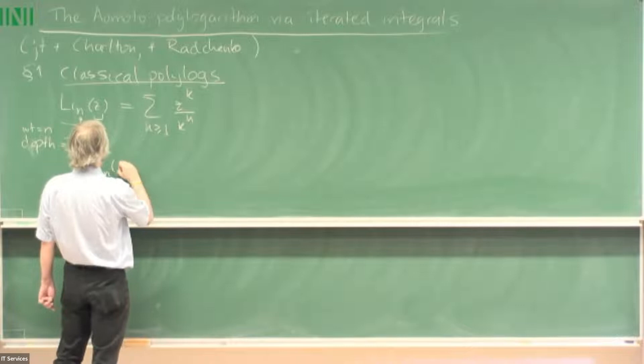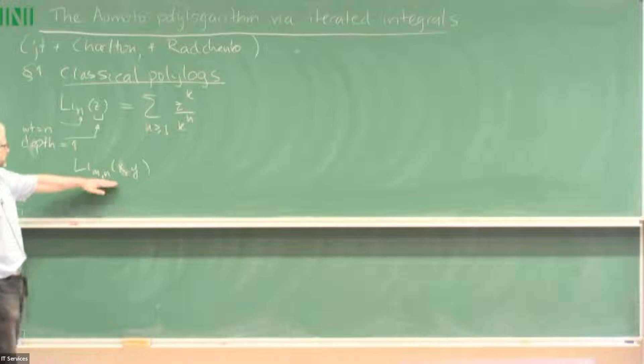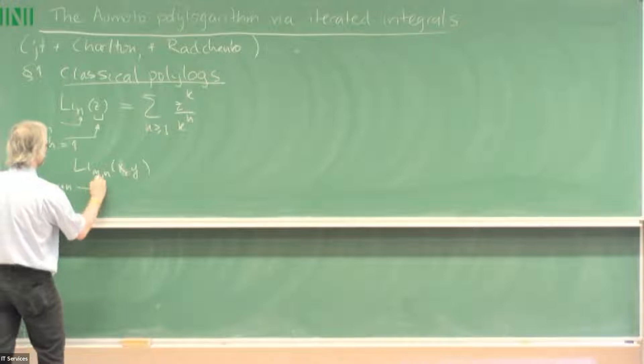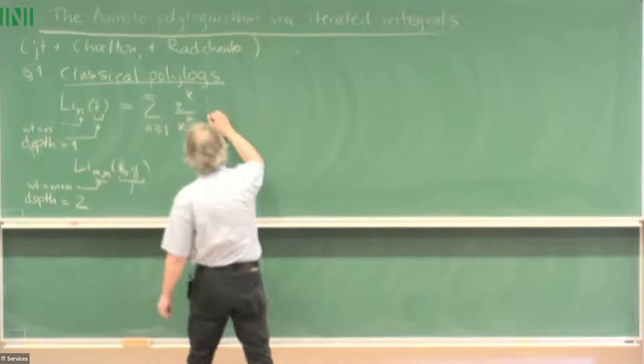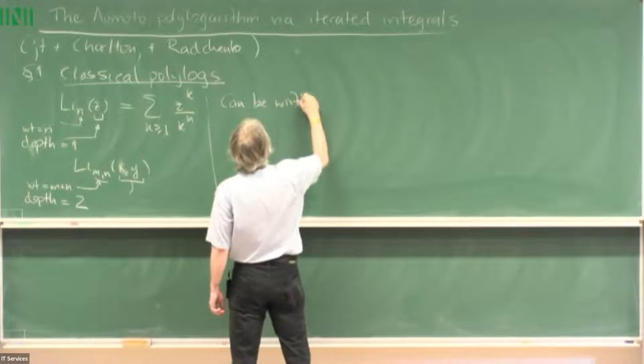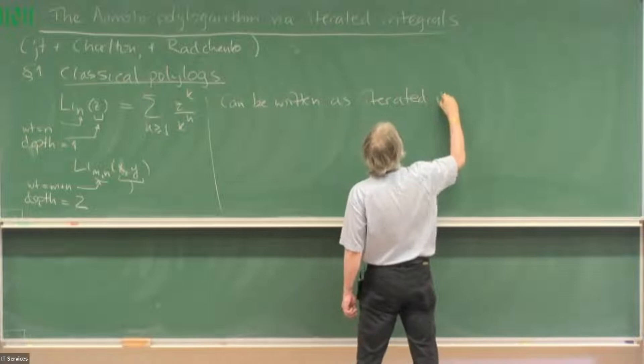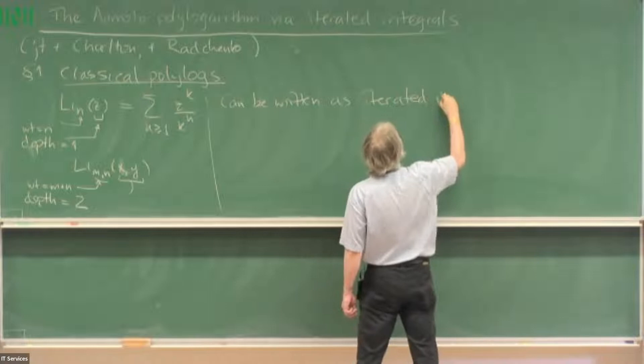These polylogarithms have avatars — they can be written as so-called iterated integrals of a specific kind. Let me introduce a notation: double-bar I. We'll later take formal versions where I leave out one of those bars just to distinguish them.